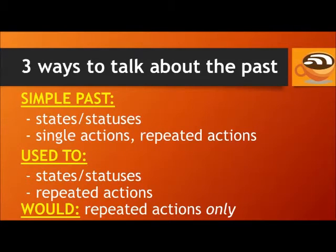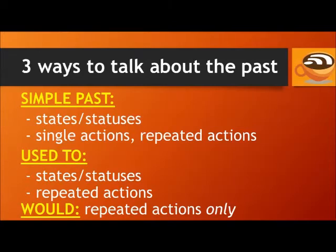Let's review the three ways to talk about the past. You can use the simple past in three ways: for states or statuses in the past, for single actions in the past, or for repeated actions in the past. You can use 'used to' for states or statuses in the past which are not true today, and for repeated actions in the past which are not true today. We can use 'would' to talk about repeated actions in the past only.